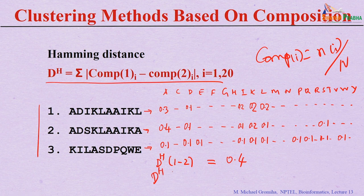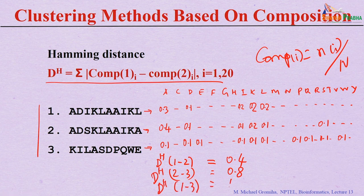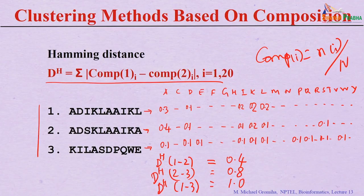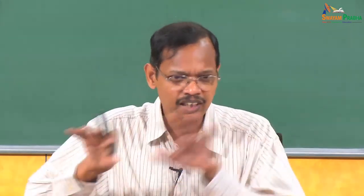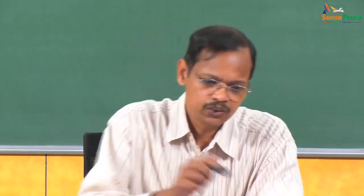The Hamming distance between sequences 1 and 3 is 0.8, which is very high. Between sequences 1 and 3, it is 1.0. So we can calculate the Hamming distance between any pairs. If you see which two sequences are close to each other, sequences 1 and 2 are closest with a value of 0.4. Using a threshold of 0.5, sequences 1 and 2 form one cluster and sequence 3 is separate. This gives a non-redundant set of sequences.